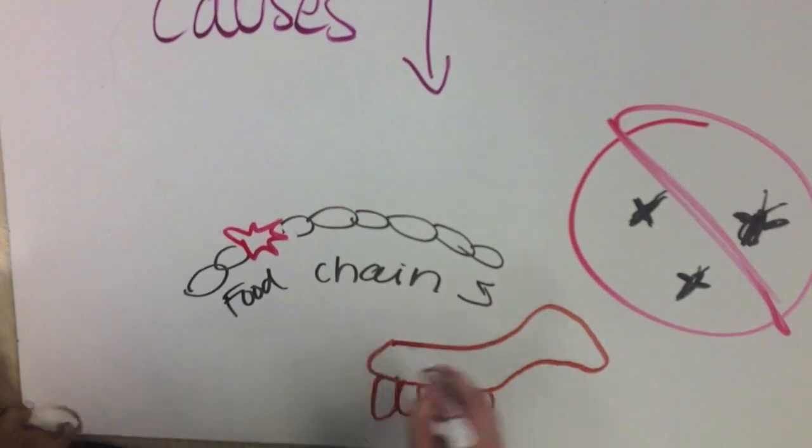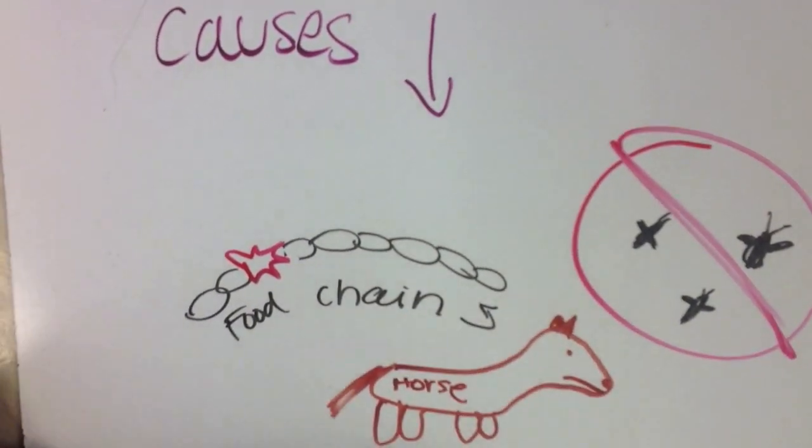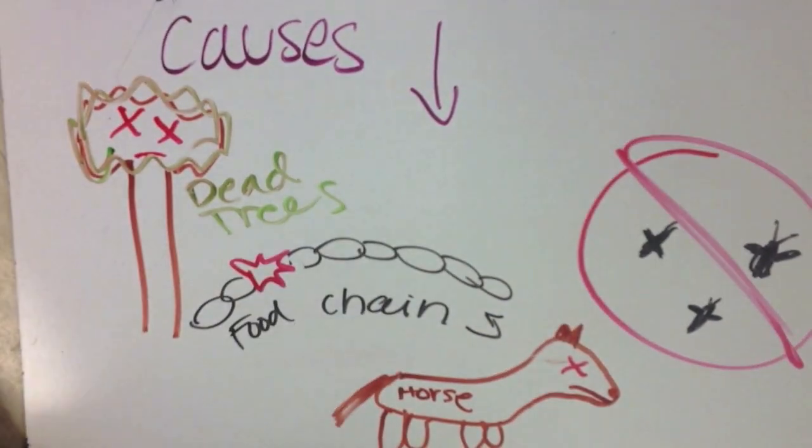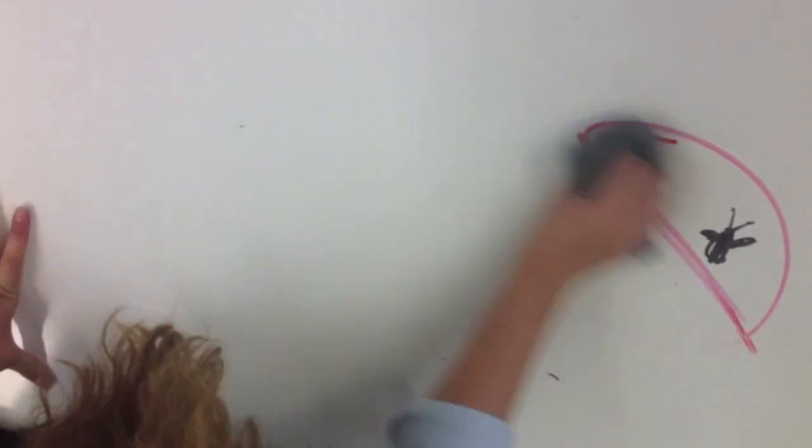Pesticides kill bugs, and when bugs die, other animals in the ecosystem die, and it creates a bad cycle that can increase the amount of endangered species, which harms other ecosystems.